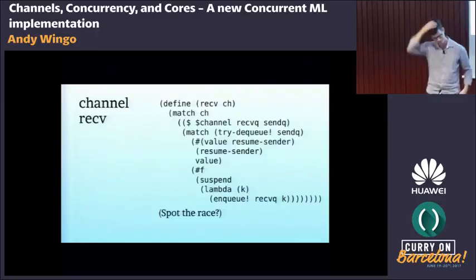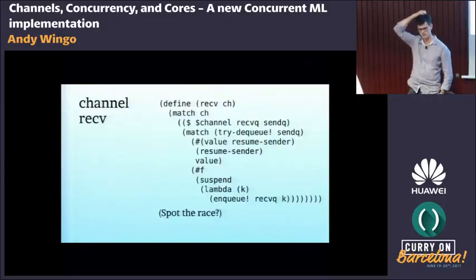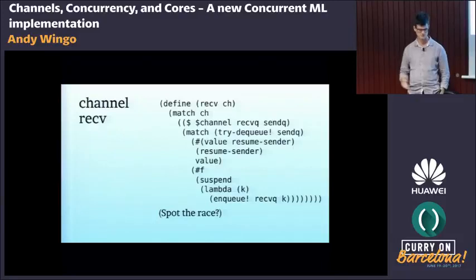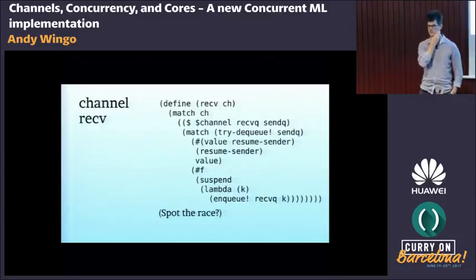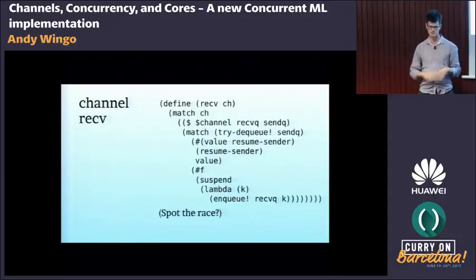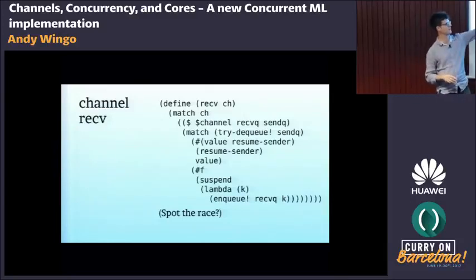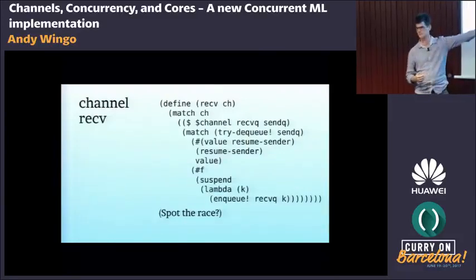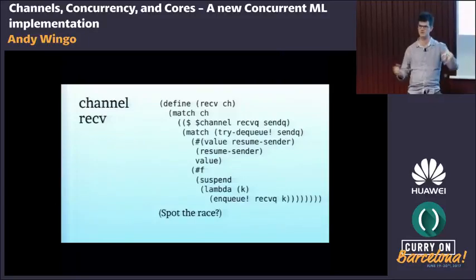If we implement a receive function on a channel operating in the presence of multiple threads, we need to avoid race conditions. A channel data structure has two components: a receive queue and a send queue — lists of waiting receivers and waiting senders respectively. If I can dequeue a sender who's ready to send a value, I return the value and resume the sender. If there's nothing there, I suspend myself and rely on the sender to resume me when it arrives. There's a race condition here.